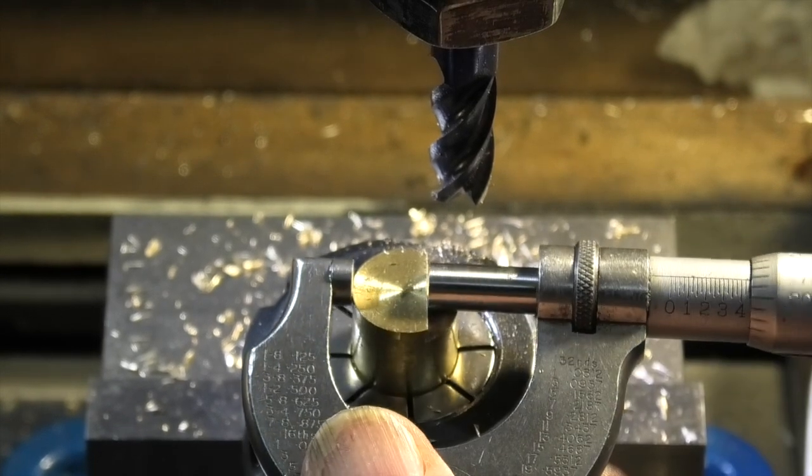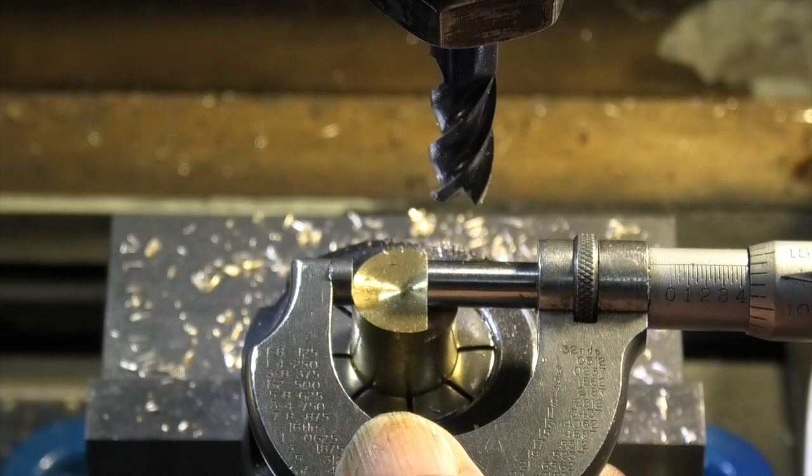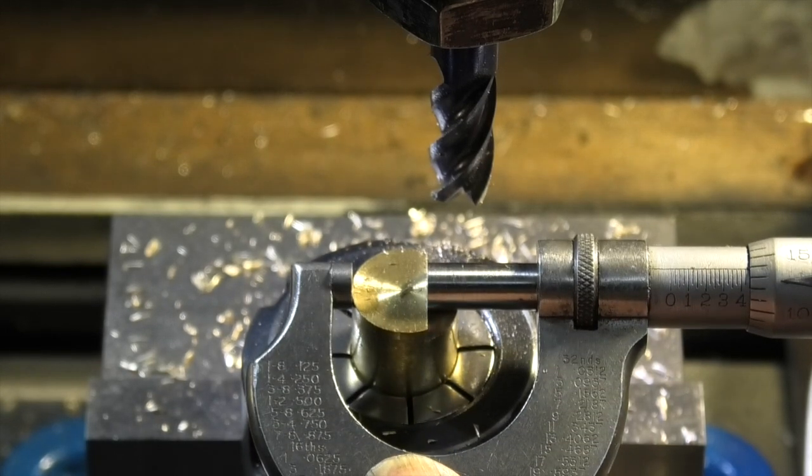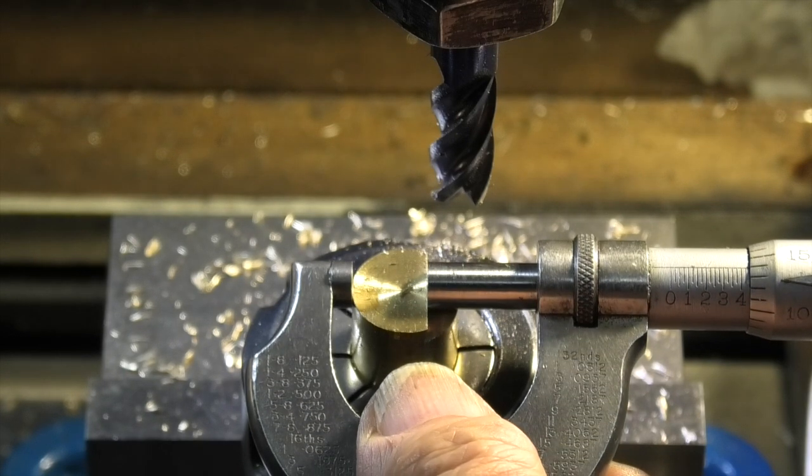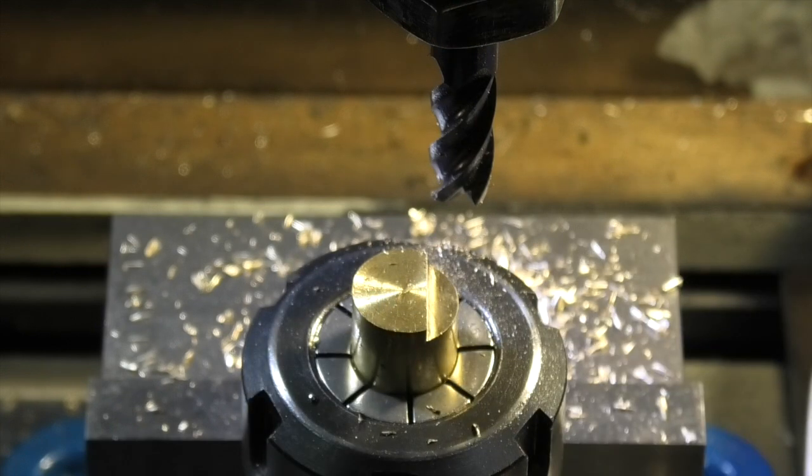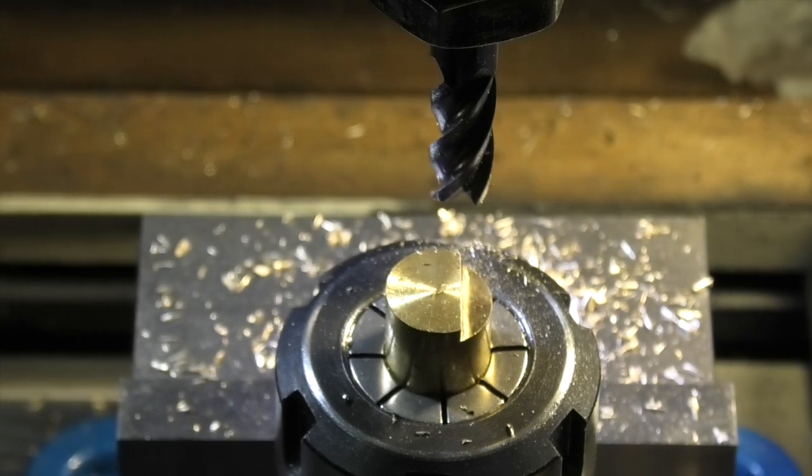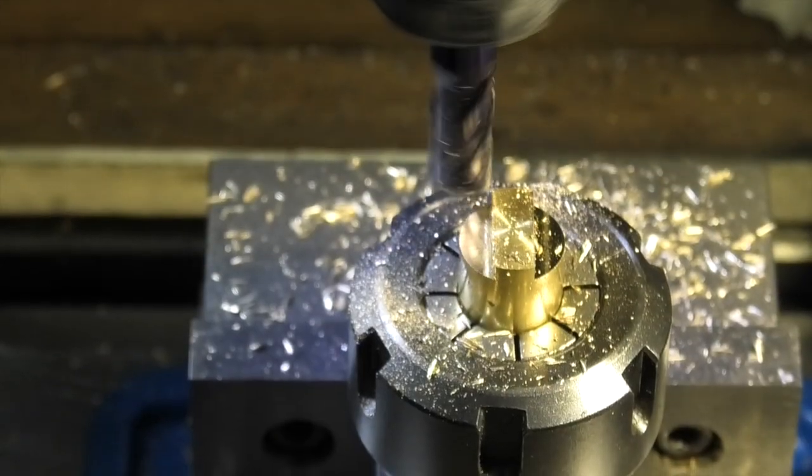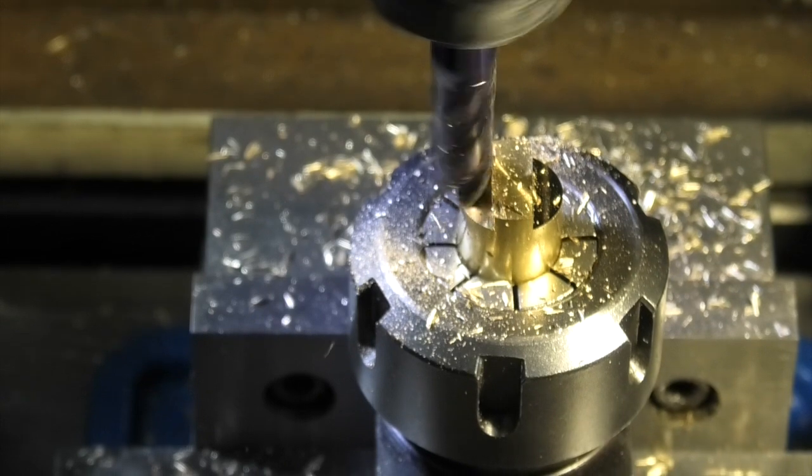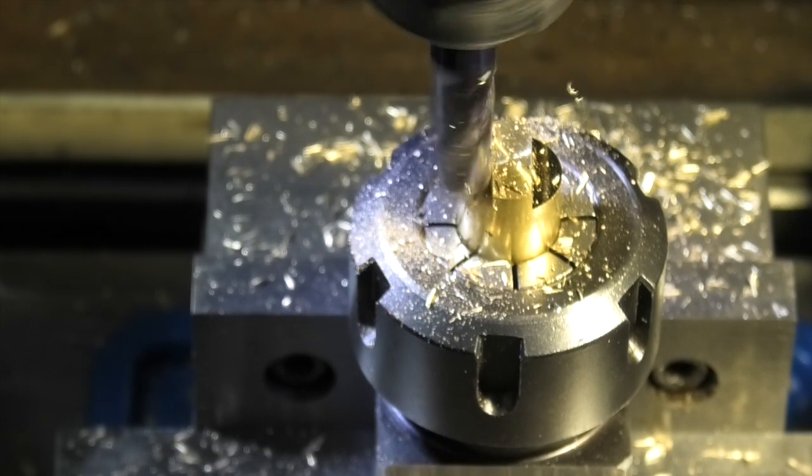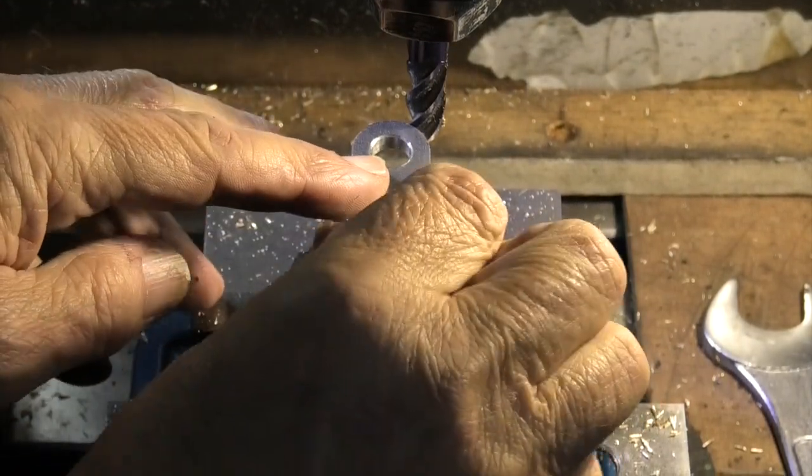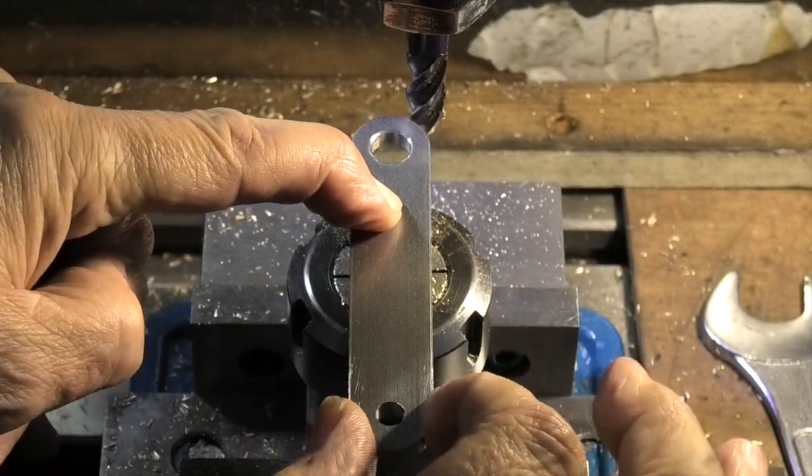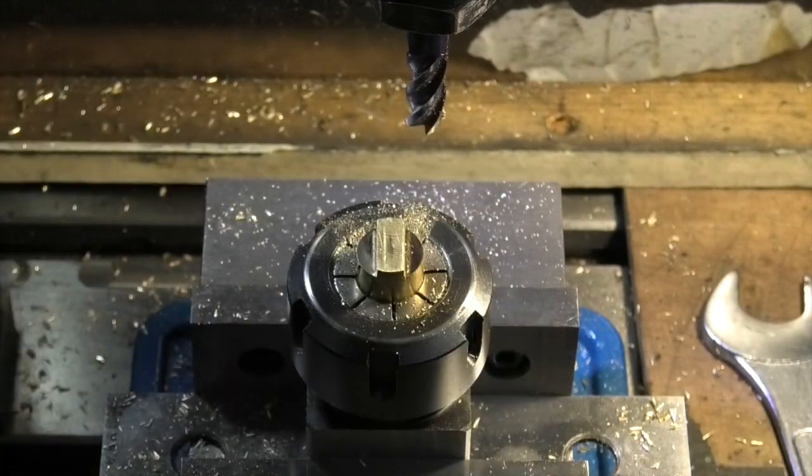That should be 0.4375. That's 0.437, just under 0.439, one and a half thou over. I'll leave it at that. I can always file a bit off to fit the slot. Now I'll move it over and do the other side. That should fit in this slot. All I've got to do now is turn it round and do the other side.